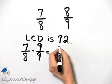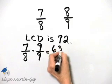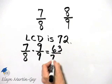So 7 times 9, that's 63, and then 8 times 9 is 72.